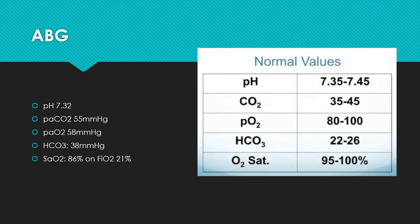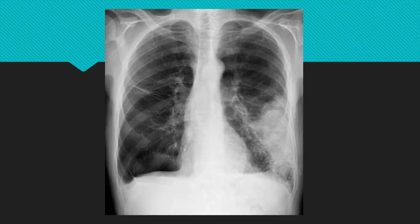Looking at her ABG results with normal values to compare: pH is 7.32 — she's acidotic. CO2 is 55 — that's high. Oxygen is very low. Bicarbonate is 38 — that's high, so there's some compensation going on. Sats are 86% and we've put her on oxygen. Overall this picture shows partially compensated respiratory acidosis, and she is a CO2 retainer. When giving oxygen to a CO2 retainer, we're aiming for sats of 88 to 92%.